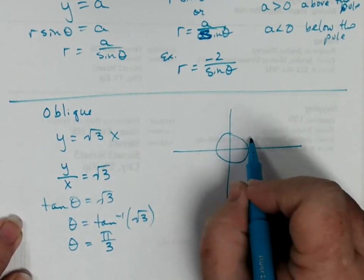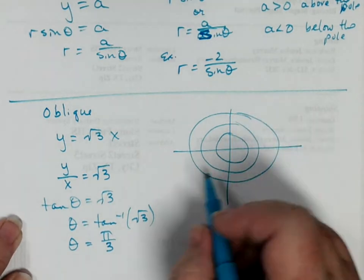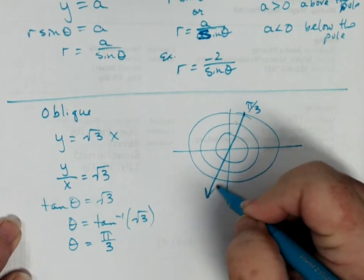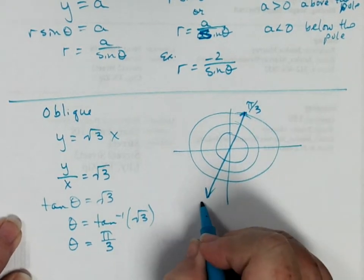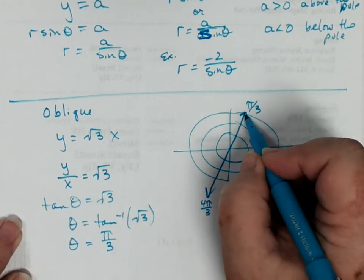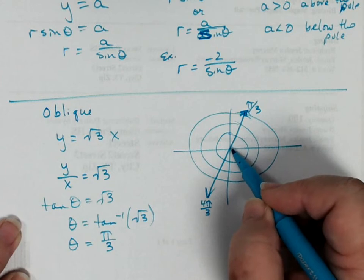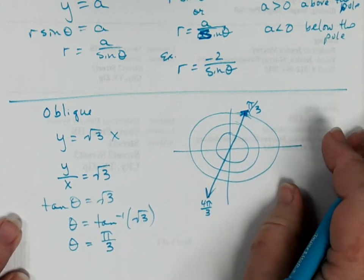We would just draw our polar graphing paper. We would find our line, which is at pi over 3, and we draw a line through the origin. It also happens to be the same location as 4 pi over 3, and that's okay. It goes on in both directions. It is the oblique line that passes through the origin with an angle of pi over 3.